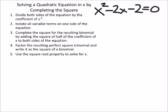So looking at step two, isolate all variable terms on one side of the equation. Well, what are the variable terms? I've got an x squared and a 2x or negative 2x. So that negative two is right now on the wrong side of the equation.